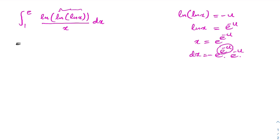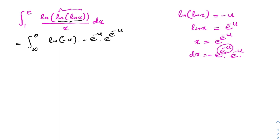Now we plug in. For the limits: when x approaches 1, u approaches infinity; when x approaches e, u approaches 0. The natural log of natural log of natural log of x becomes minus u. And dx becomes minus e to the minus u times e to the e to the minus u du.